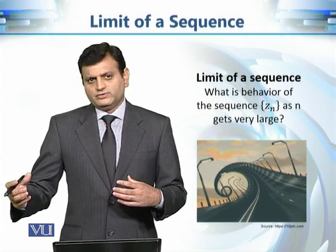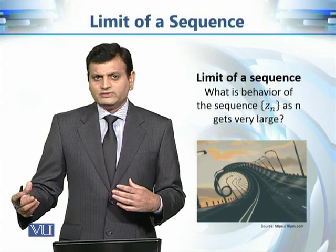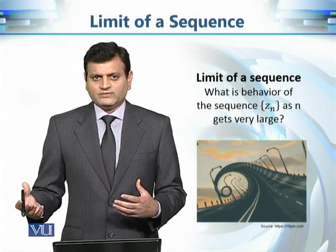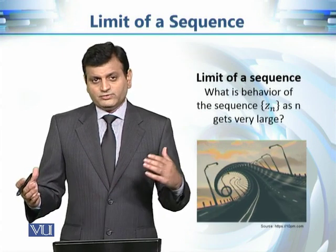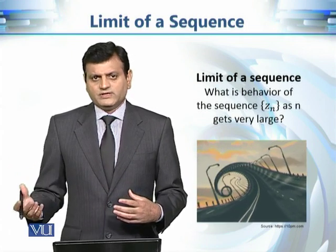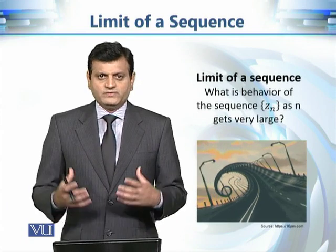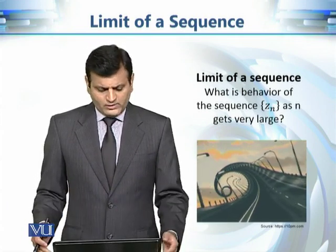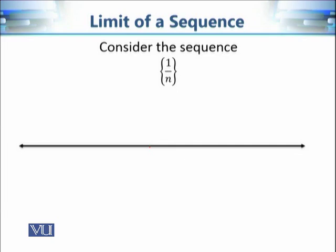A natural question is: what is the nth term, or what is the pattern, and is this pattern approaching some complex number or not? Is it approaching a fixed complex number, or are we approaching something like infinity? This is the main point of this part of the discussion on sequences. Let's look at a simple example: the sequence given by 1 over n. It's a sequence of real numbers, but we will generalize the pattern to sequences of complex numbers.